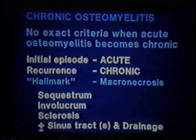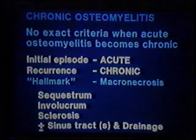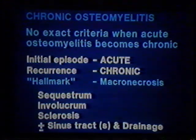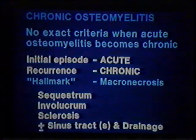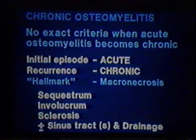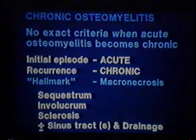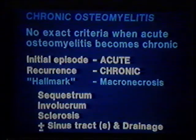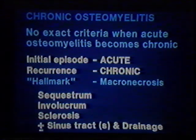Under hyperbaric conditions we can achieve partial pressures of oxygen in infected bone — from rabbit studies — over 100 mmHg. Chronic osteomyelitis has no exact criteria. The most useful definition is: if you have an initial episode, it's acute, and you treat it with antibiotics and it gets better, that's acute osteomyelitis. If it ever comes back, then you call it chronic. Macroscopic necrosis of large areas is the hallmark of the disease — loose pieces of bone (sequestra), sclerosis of the bones, and you may or may not have a sinus tract present.